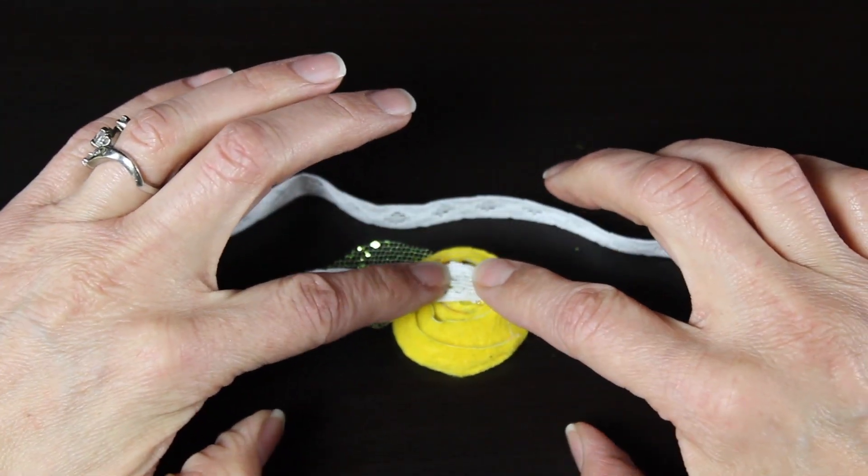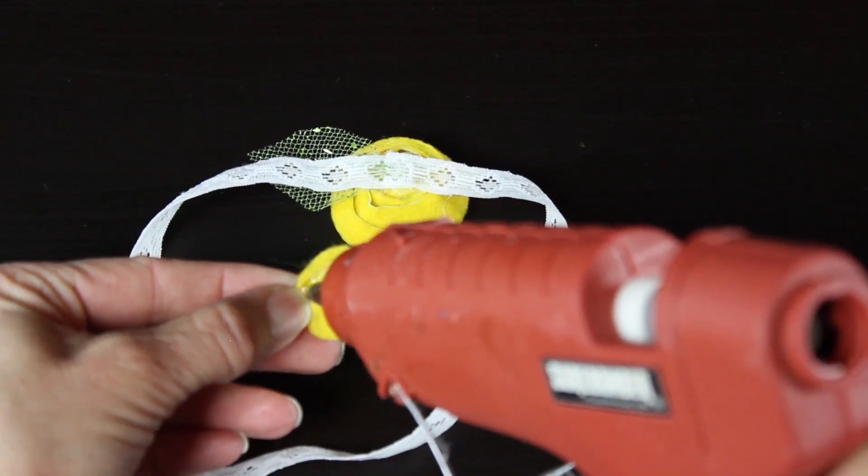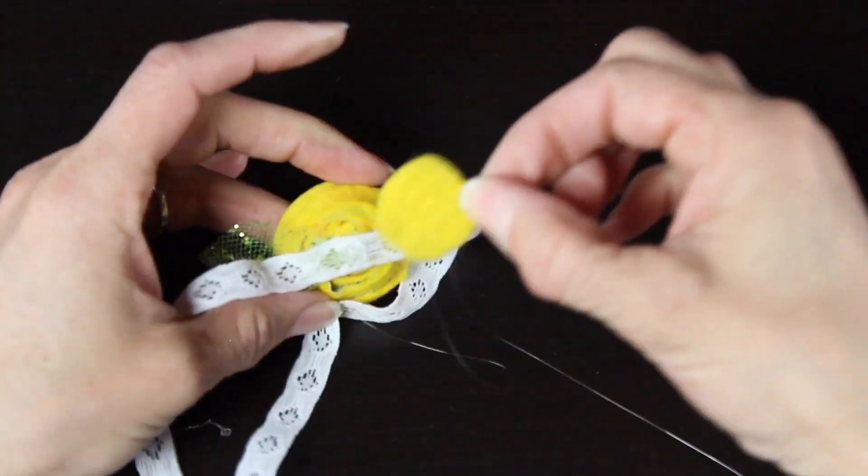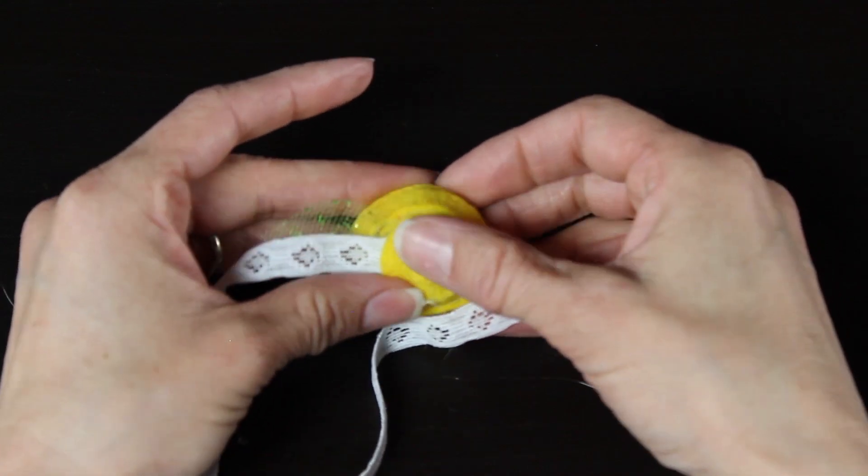Then you're going to grab the little round circle that you cut out and you're going to place that right on the back over the back of the flower. And this will make it nice and soft on the back so it's not scratchy and so it's soft against your baby's head and you're all set guys.